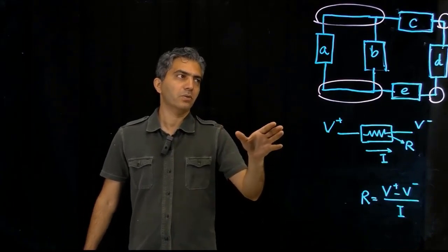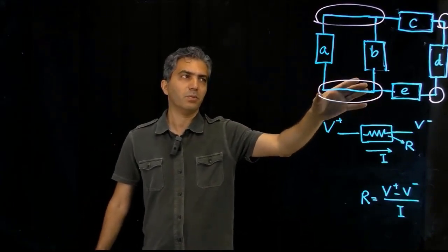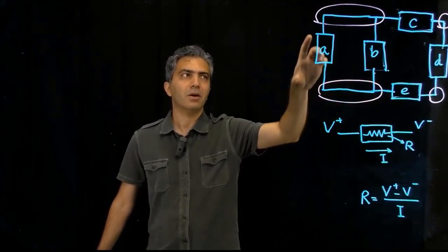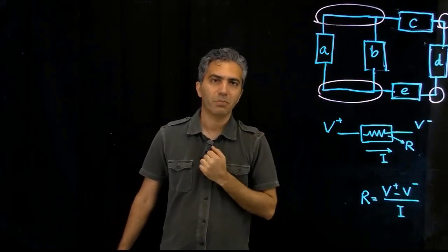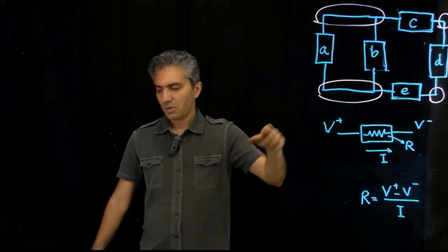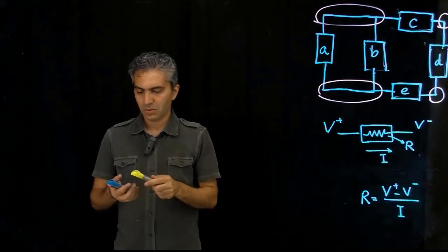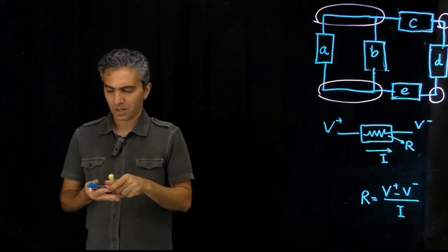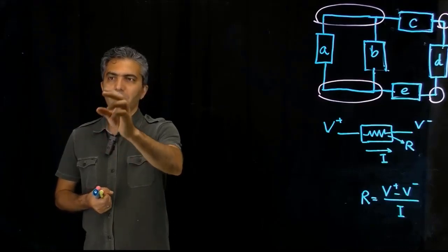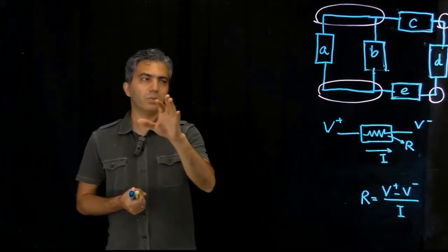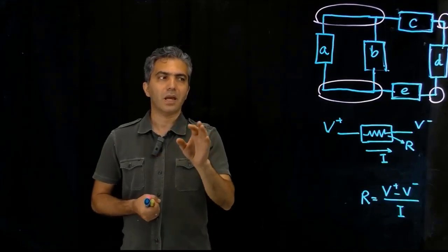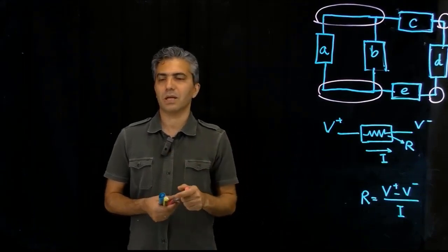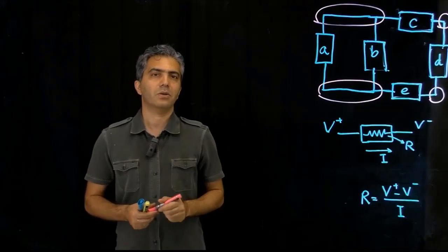What we are trying to do is take this electrical network — a network of electrical components connected to each other with wires — and calculate all the voltages across and the currents going through the components. To do so, I'm going to introduce a very general algorithm. If you follow this algorithm step by step, you will not have any problem analyzing any circuit, regardless of how complicated that circuit is or what components are in it. This is a very general approach to circuit analysis.